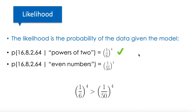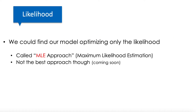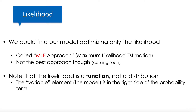The likelihood leads us to choose the model that fits more with the data, and there is a direct way to calculate that: the probability of the data given the model. We can find our best model by optimizing the likelihood — that's called the MLE approach, or maximum likelihood estimation — but we are going to see that this is not the best approach. Note that the likelihood is a function, not a distribution, because the variable element — the model — is on the right side of the probability term.